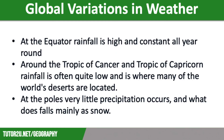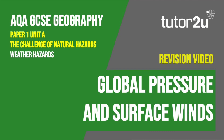At the poles, very little precipitation occurs, and what does occur falls mainly as snow. That concludes this Tutor2U revision video focusing on global pressure and surface winds. Thank you for watching.